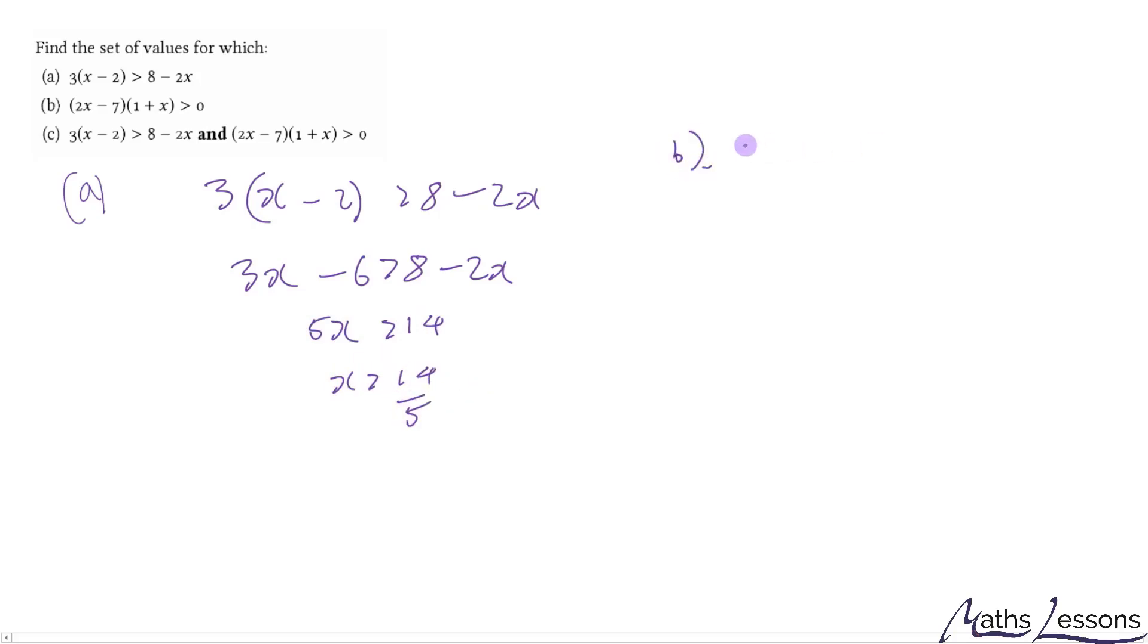Part B. Let's factorize this out. Well, it's already in factor form. That makes life a lot easier for us. And we've got this. So this is an inequality.